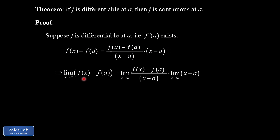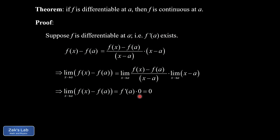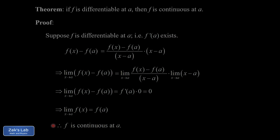On the left-hand side we have the limit as x goes to a of f of x minus f of a — our goal is to show that equals zero. On the right-hand side, we recognize the first expression as the definition of the derivative, which by assumption exists and equals a finite number. The last term is the limit as x goes to a of x minus a, which goes to zero. So we replace the derivative limit with f prime of a, a finite number, and the remaining limit with zero. A finite number times zero unambiguously gives us zero. We've shown this limit equals zero, which is equivalent to the limit as x goes to a of f of x equaling f of a — the definition of continuity. Therefore, f is continuous at x equals a.